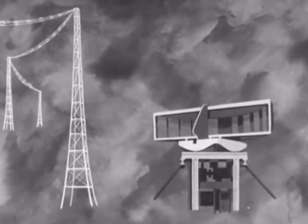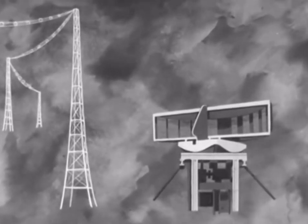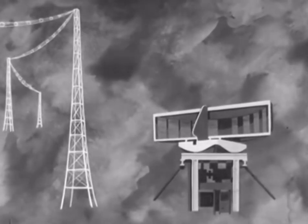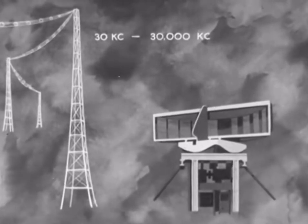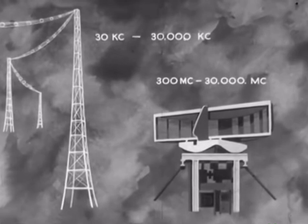The radio waves usually used in broadcasting are radiated at a frequency of from thirty kilocycles to thirty thousand kilocycles a second. In radar, the frequencies may be a thousand times higher.